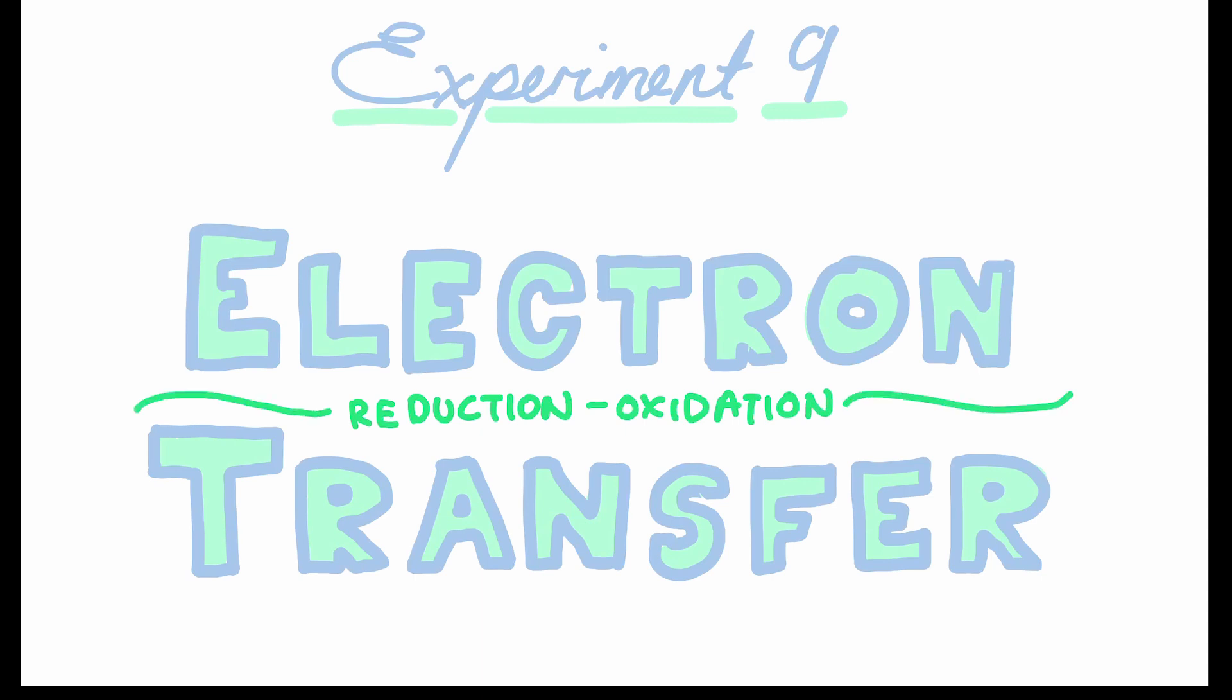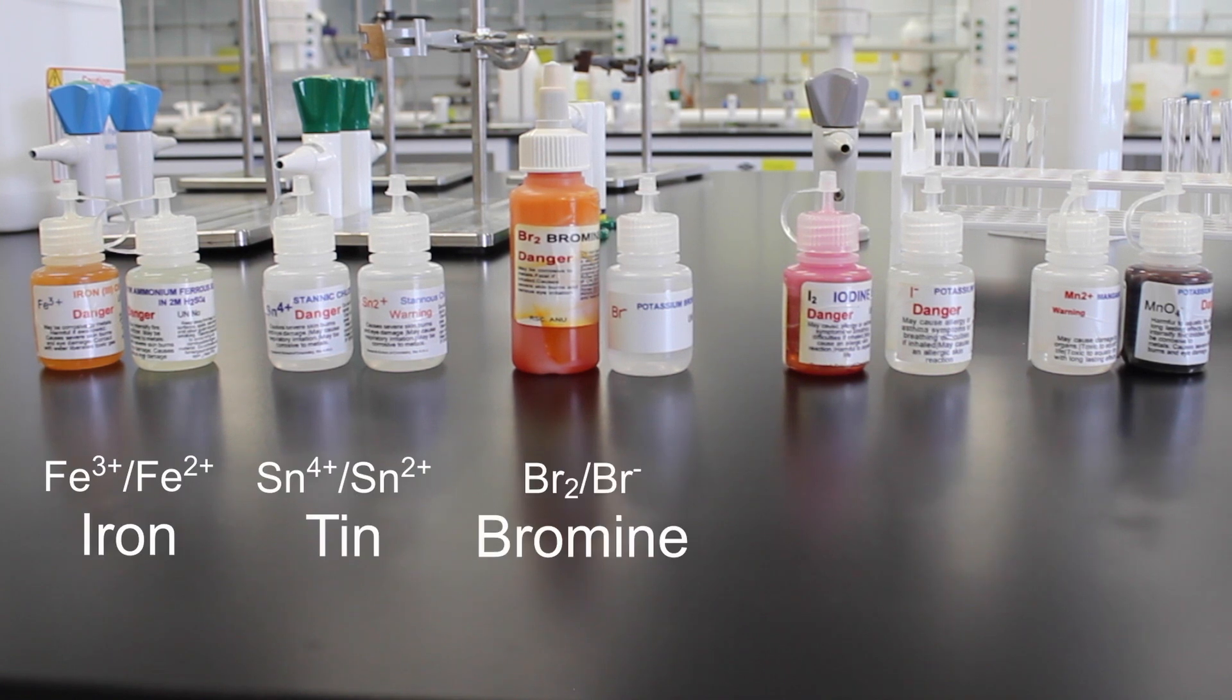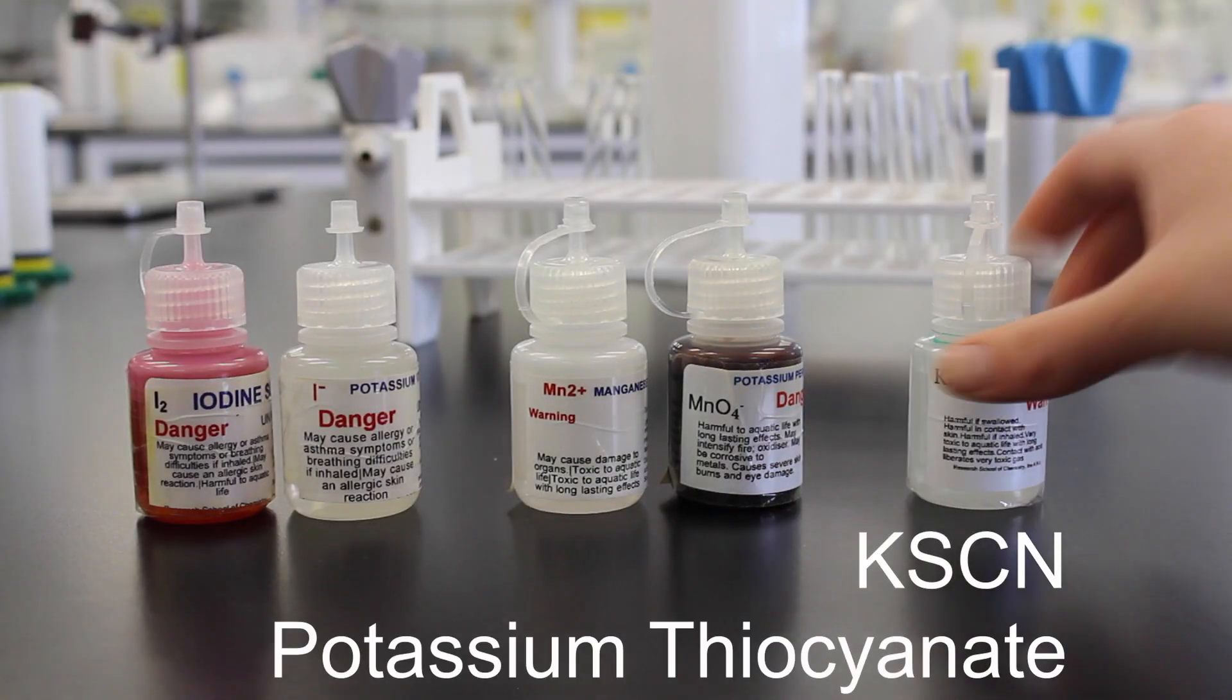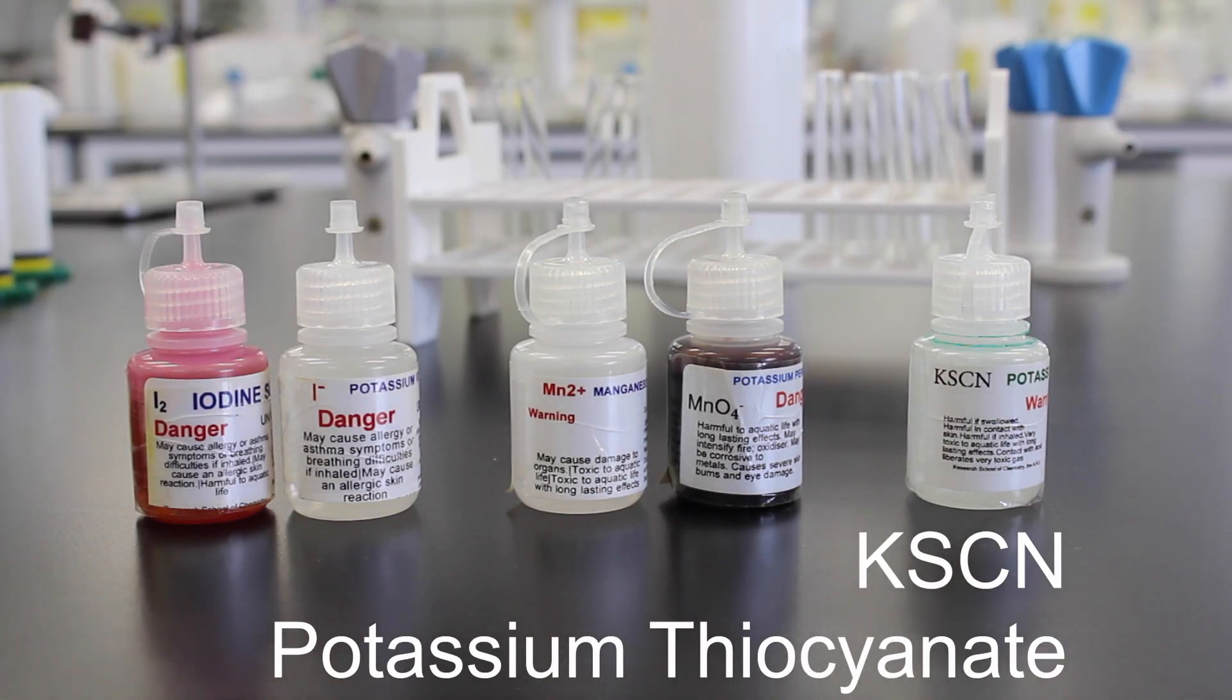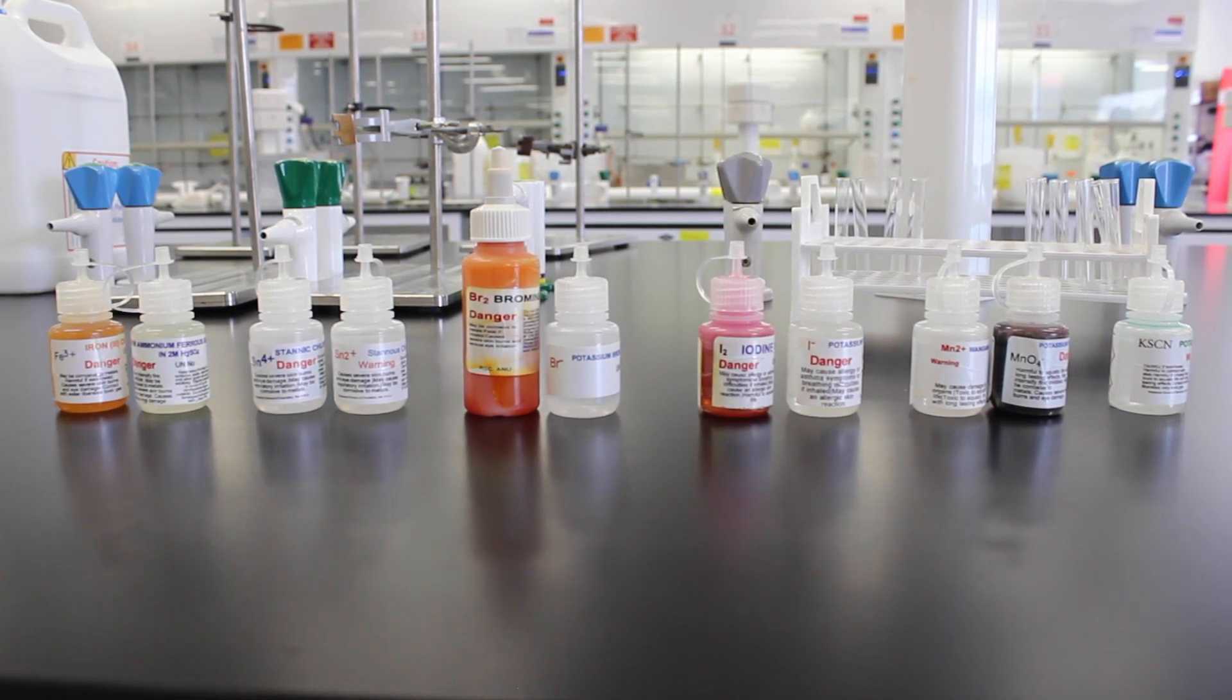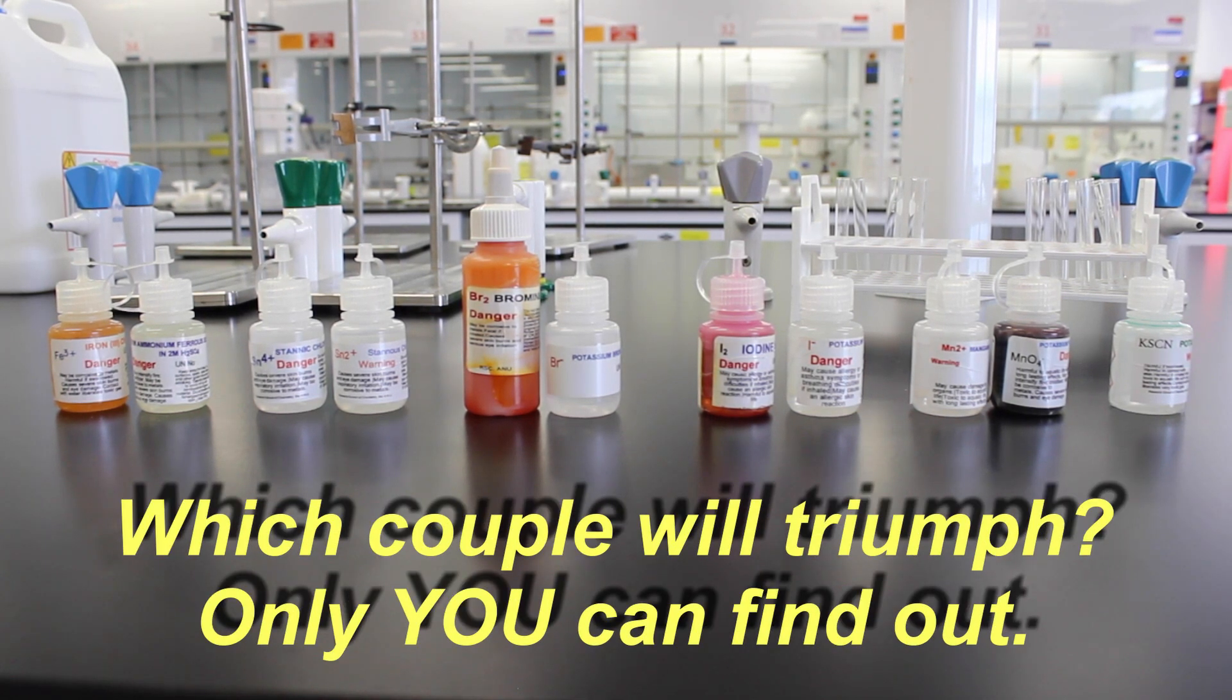The five couples we'll be looking at are for iron, tin, bromine, iodine, and manganese. We'll also be making use of chemical indicators such as potassium thiocyanate to detect species in our reactions and draw conclusions about each of the couple's electrode potential from the results we observe.